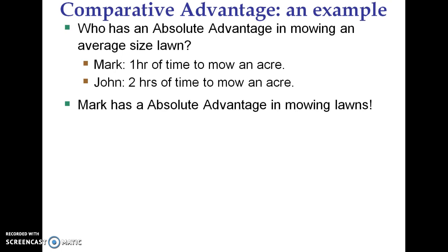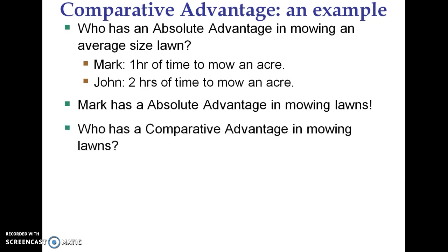Now, does this necessarily mean that Mark should be the person mowing lawns in the society? Well, this isn't really complete — it doesn't take into consideration the alternatives. Instead of mowing lawns, Mark can work as a bookkeeper, but absolute advantage doesn't take that into consideration. John's alternative is to work at the pizzeria. So let's go through the next trade concept: comparative advantage.